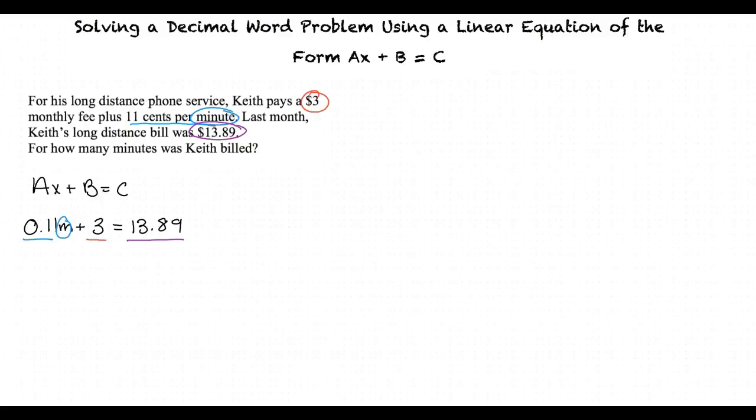Time to solve our equation for m to determine the number of minutes for which Keith was billed. First, we are going to subtract 3 from both sides, and we are left with 0.11m equals 10.89.